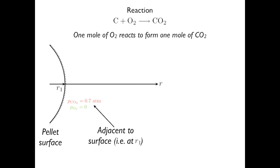Adjacent to the surface we have pure CO2, so the partial pressure of oxygen there must be zero. Our total pressure is 0.7 atm, so the partial pressure of CO2 equals 0.7 atm.